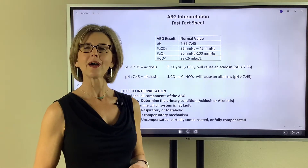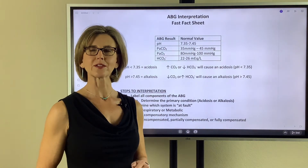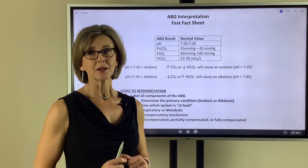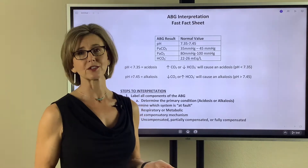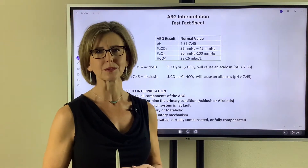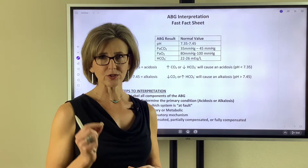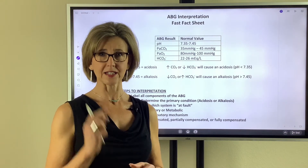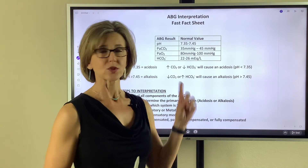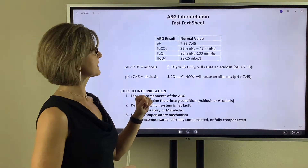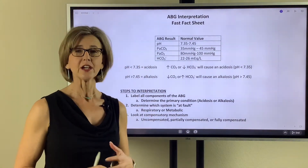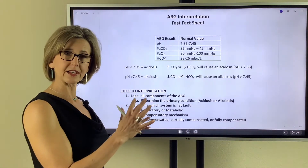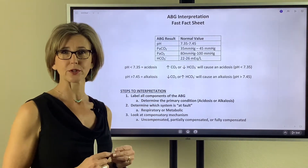Welcome to Respiratory HQ. I'm Tanya Peele and today we are going to talk about ABG interpretation. Because when you learn it in school, let's face it, it can be a little bit confusing. So I have a tool that I think is going to simplify the process into three easy steps. I call this my ABG interpretation fast fact sheet. Let's go over the sheet, make sure we understand what everything is on it, and then I'll give you an example interpretation.